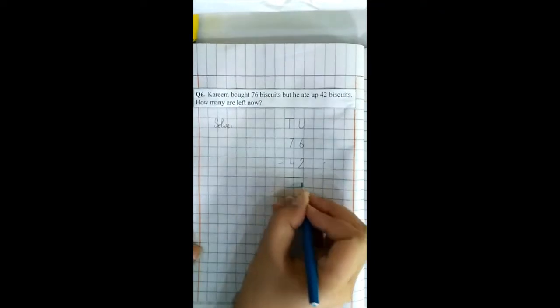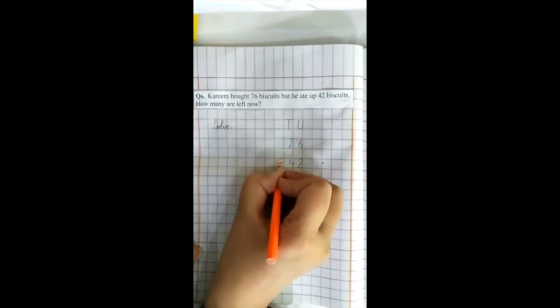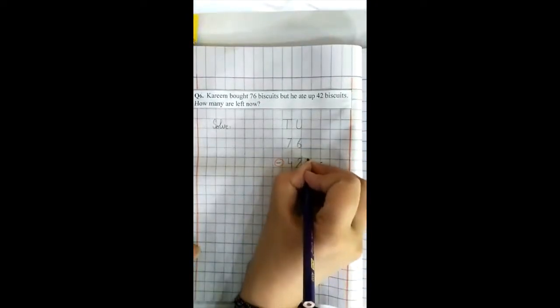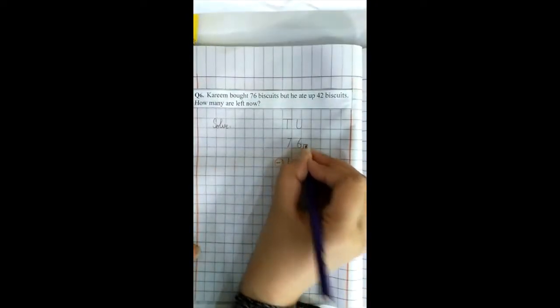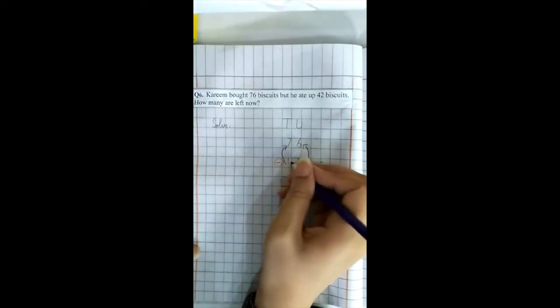Draw a line. First of all, circle the sign of subtraction. ہم minus کے sign کو circle کریں گے. Make an arrows from small to big. ہم چھوٹے نمبر سے بڑے نمبر کی طرف arrow بنائیں گے.